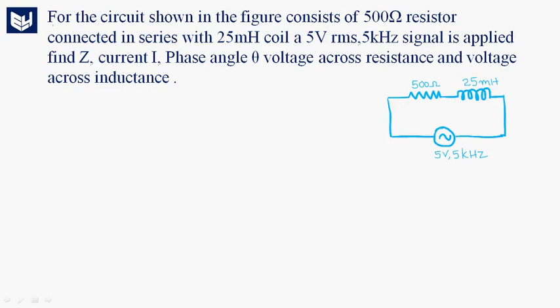Hi guys, today our question is: for the circuit shown in the figure, consisting of a 500 ohm resistor connected in series with a 25 millihenry coil, a 5 volts RMS, 5 kilohertz signal is applied. Find Z, current I, phase angle theta, voltage across resistance, and voltage across inductance.